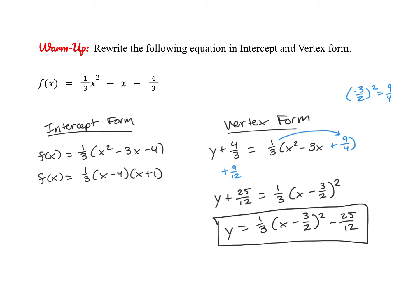Go ahead and check your work here. So in intercept form, you're essentially just factoring, and then here's your answer. And then for the vertex form, remember you need to complete the square to create that binomial squared, so just be careful here. The number that completes your square is 9 fourths, but you're actually adding 9 twelfths to each side, and then when you factor this, it becomes x minus 3 over 2 squared, so here's the vertex form.